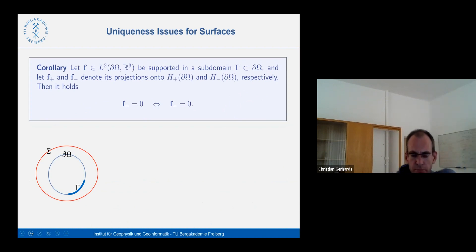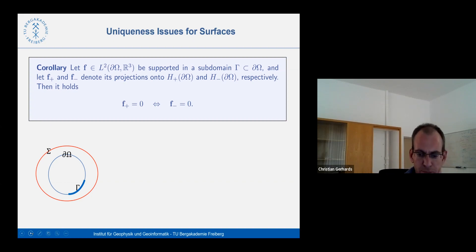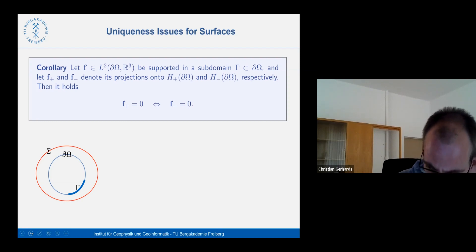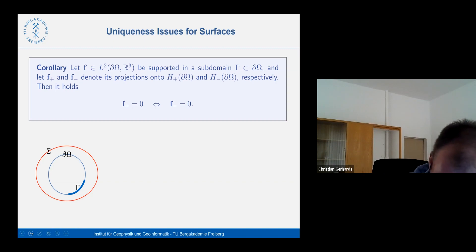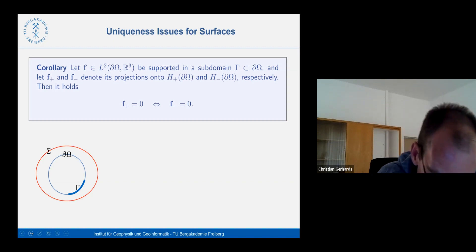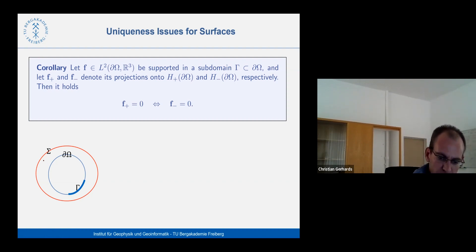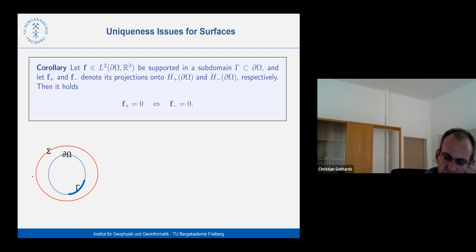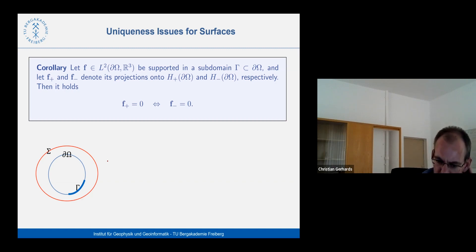In summary, the Hardy spaces describe the components of magnetization that can be uniquely reconstructed, while the null spaces are described by the spaces I, O, and D. For our applications it's sufficient to look at the Hardy spaces even off the sphere, since they describe what can be obtained uniquely from measurements outside or inside. In the typical setup with satellite measurements outside the Earth, we can only recover the H+ component of our magnetization.